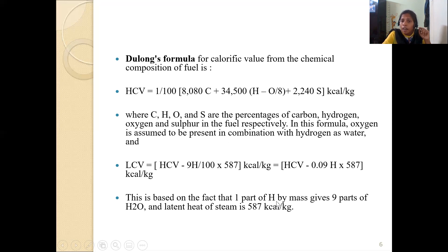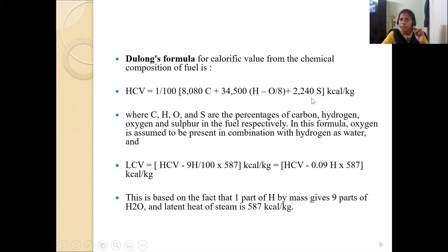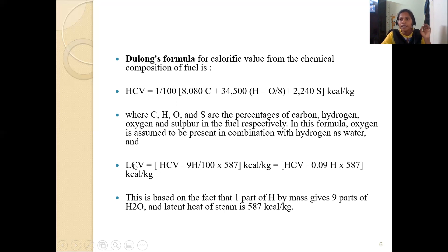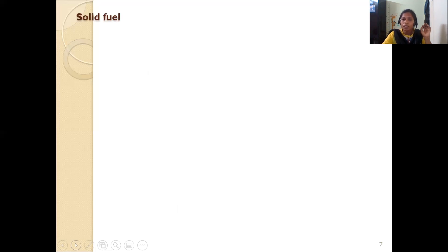This is based on the fact that one part of hydrogen by mass gives nine parts of water, and the latent heat of water vapor is 587 kcal. So LCV = HCV − 0.09 × H × 587. In the external examination, the percentages of carbon, hydrogen, oxygen, and sulfur are given; substitute these into DuLong's formula to find HCV, then substitute into the LCV formula. This is important for long answer questions.